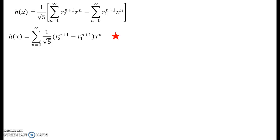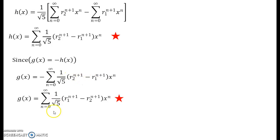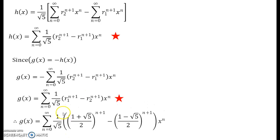Since g(x) equals minus h(x), we push the minus sign inside the summation, swapping the terms. This gives g(x) as the sum of (1/root 5) times (r1 to the power n plus 1 minus r2 to the power n plus 1) times x to the power n. Substituting back r1 equals (1 plus root 5)/2 and r2 equals (1 minus root 5)/2, we have obtained g(x).